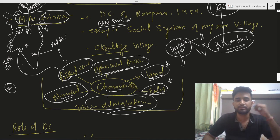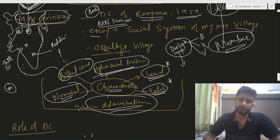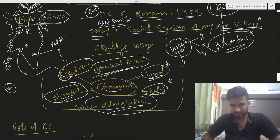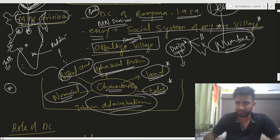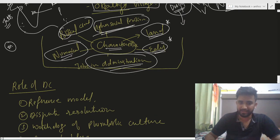MN Srinivas gave the concept of dominant caste. His book was 'Dominant Caste of Rampura' written in 1959. He also wrote an essay titled 'Social System of Mysore Village,' which studied the Okaliga community, who were the dominant caste in that region.